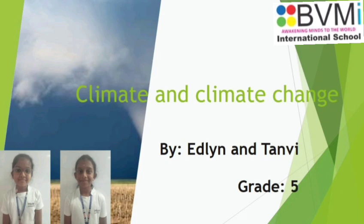Increased drought: water is becoming scarcer in more regions. Drought can stir destructive sand and dust storms that can move billions of tons of sand across continents. Deserts are expanding, reducing land for growing food. Many people now face the threat of not having enough water on a regular basis.